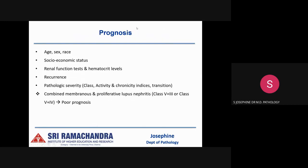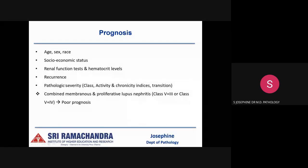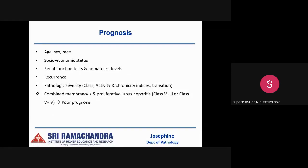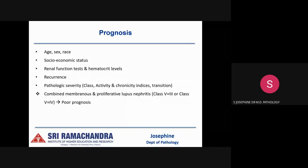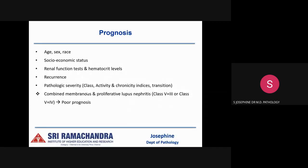Prognosis depends on age, sex, and race. Poor outcomes are noted in African-Americans, males, children, those with lower socioeconomic status, elevated creatinine, low hematocrit, and repeated SLE recurrences. It also depends on pathological severity — the class of lupus nephritis, activity and chronicity index, and transition between classes. A diagnosis of combined membranous and proliferative lupus nephritis, such as class 5 plus class 3 or class 5 plus class 4 as in our case, carries a poor prognosis.